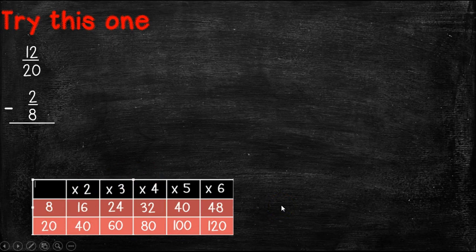Then all of the multiples of 20 and look for the lowest common denominator. In this case, it's going to be 40.